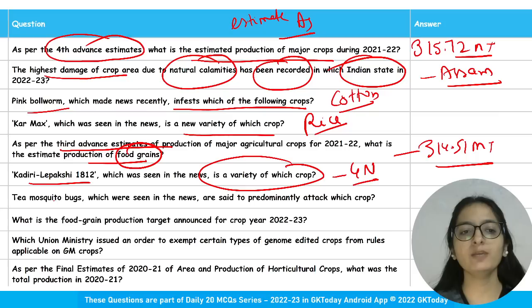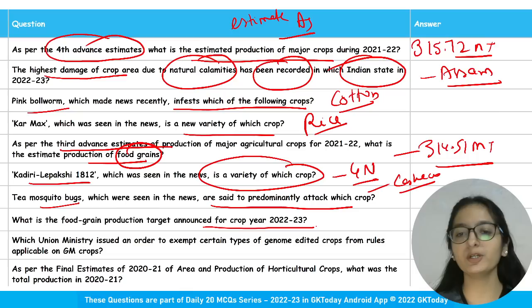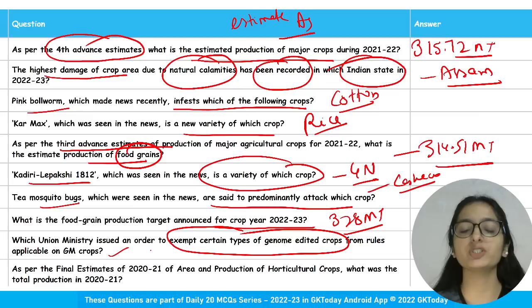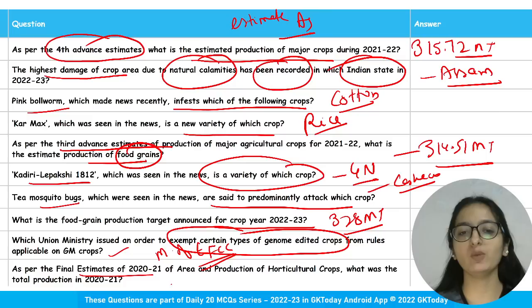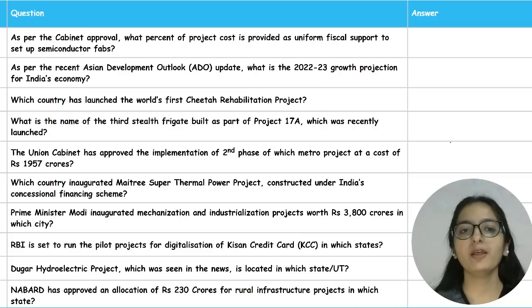Kadiri Lepakshi is a variety of groundnut. Mosquito bugs predominantly attack cashew. The food grain production target announced for crop year 2022-23 is 328 million tons. The Ministry of Environment, Forest and Climate Change issued an order to exempt certain types of genome-edited crops from rules applicable to GM crops. As per the final estimates of 2020-21, total horticulture crop production was 334.60 million tons.